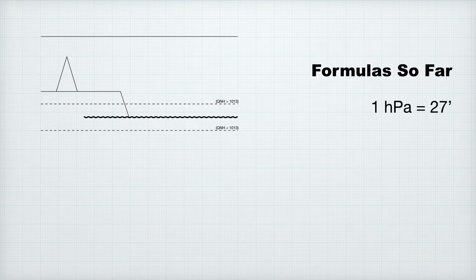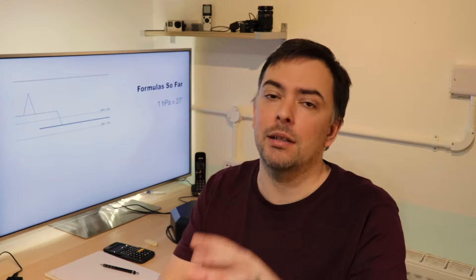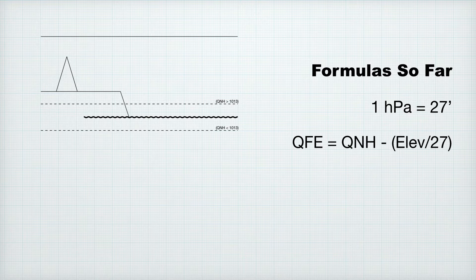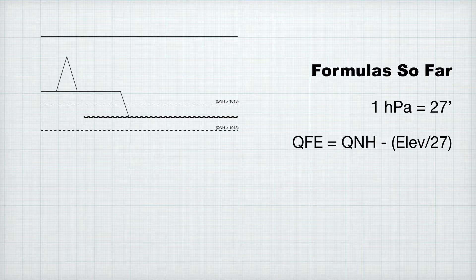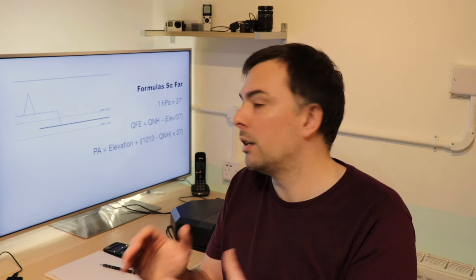And as a quick recap, here are the formulas that we've looked at so far. One hectopascal equals 27 feet, and you might say 30 feet. Different books for different subjects will say either 27 or 30. Ultimately, be aware that it could be either. Read the question because it will most likely tell you what to use. For the sake of this, I'm going to try and use 27 because I feel like it's a more accurate number. QFE equals QNH minus the elevation divided by 27, and pressure altitude is your elevation plus (1013 minus the QNH) times 27.